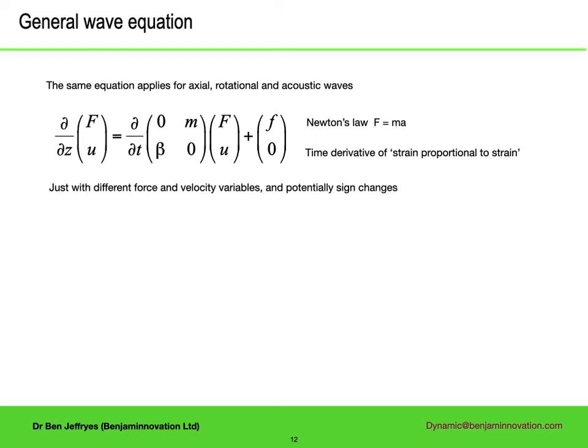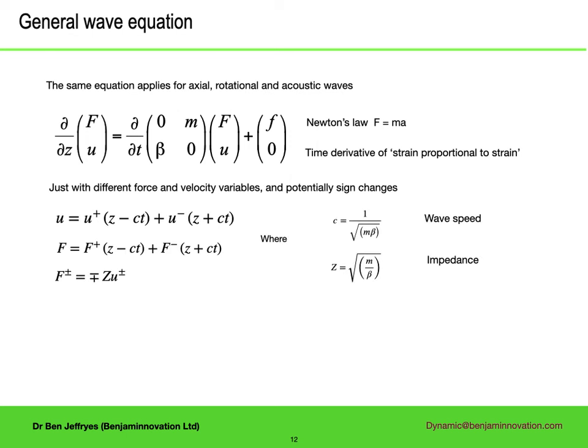The three modes that propagate long distances — axial, rotational, and fluid acoustic — are all governed to a reasonable approximation by a simple wave equation, and it's the same equation for all three, just with different variables and constants. There's a pair of first-order partial differential equations: one is simply F = ma, Newton's law, and the other is Hooke's law, that stress is proportional to strain — or rather the time derivative of Hooke's law. When the material terms M and β are constant and there is no applied force F, solutions are waves moving forwards or backwards with constant speed.